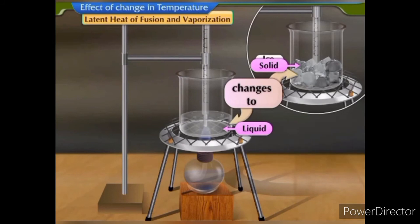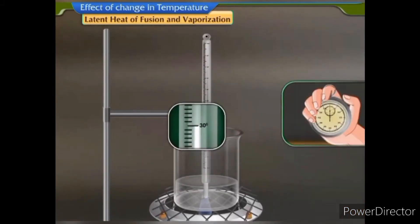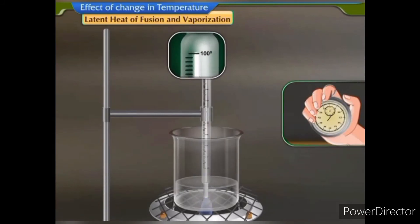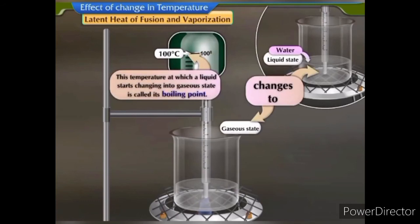Now the whole of the ice has melted and changed into water. If we continue the heating process, the temperature of water starts rising steadily. We note the temperature every minute and find that it rises gradually till it reaches 100°C, after which it becomes constant.